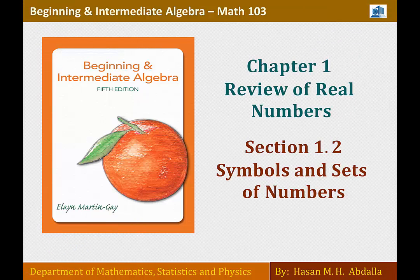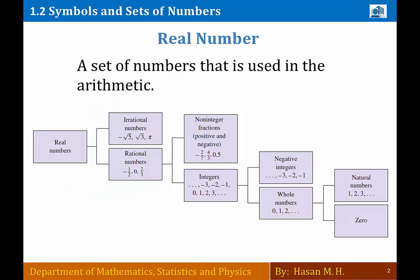We're going to talk about the numbers and see how scientists have divided numbers into groups, so we can use it later with the value of x. The first thing scientists have done is create a box called the real numbers box, and in that box they put all the numbers.